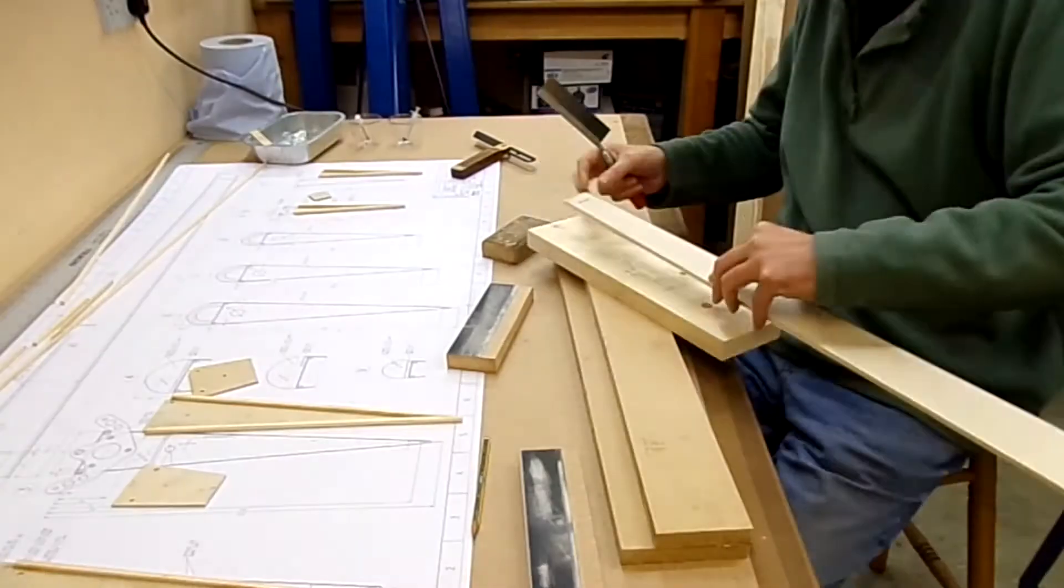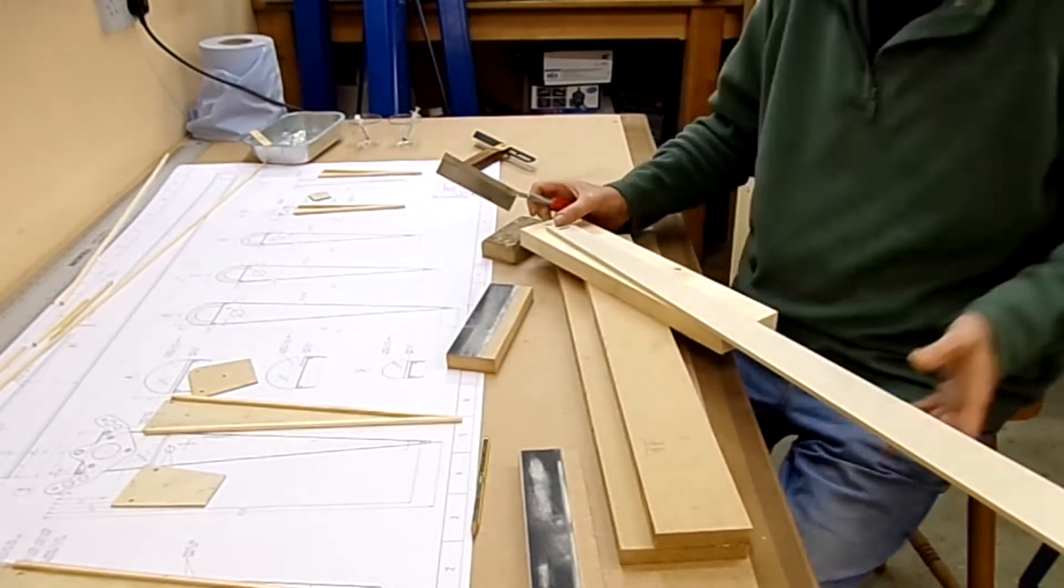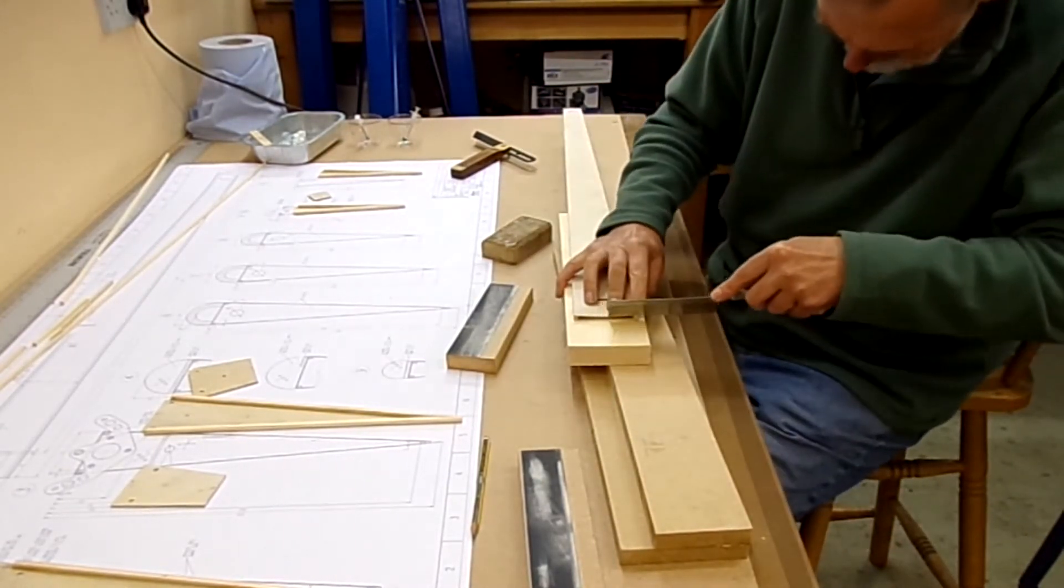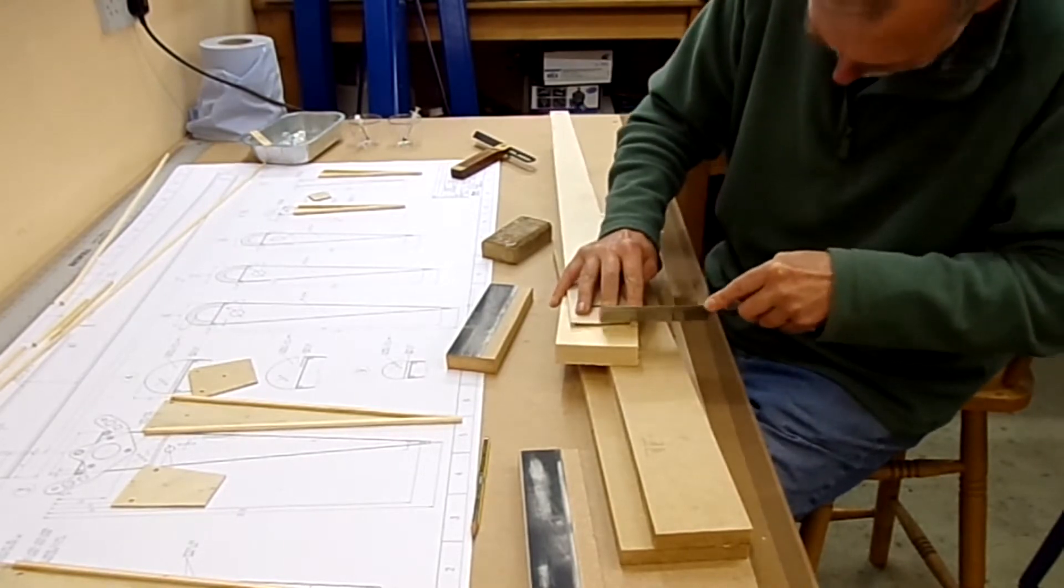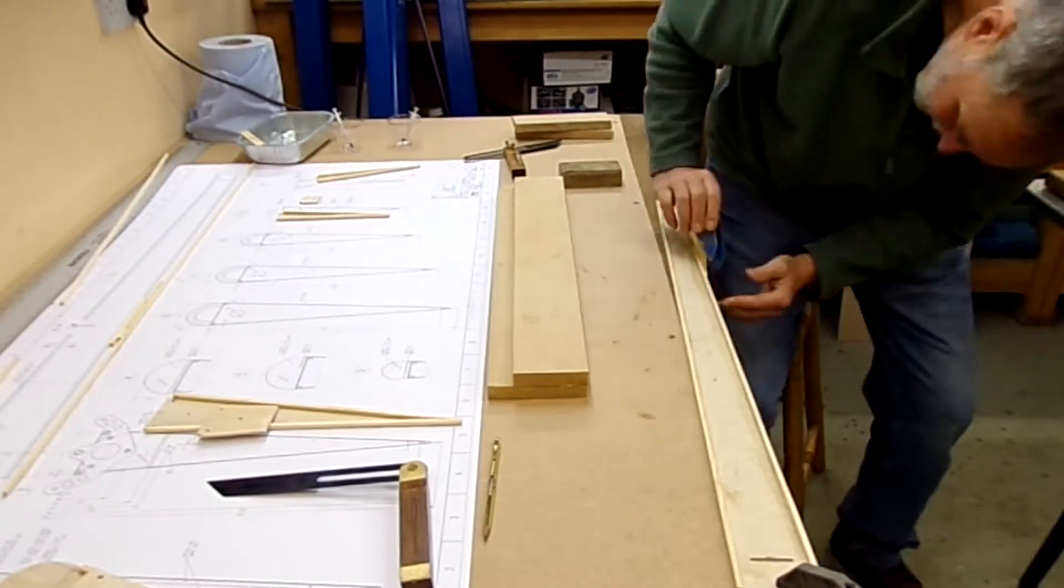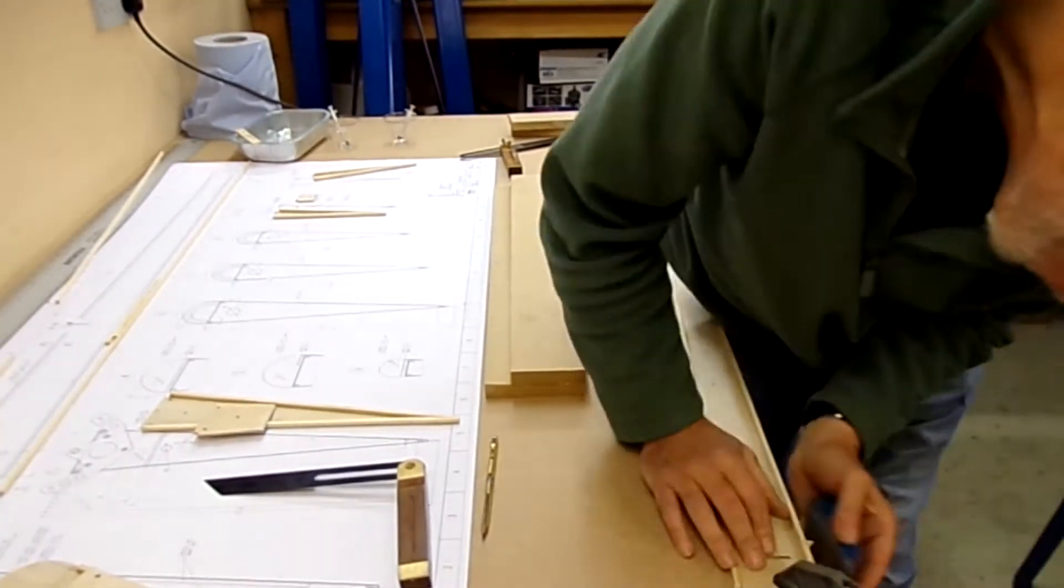Thank you, carry on watching the video. So here I am, I'm just cutting the ends of the stringers at the angles required for the ribs to fit on properly, just the excess which I had hanging out the ends.